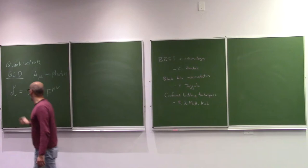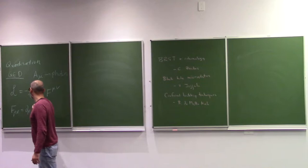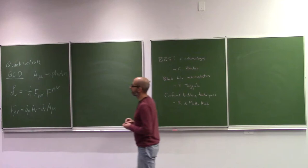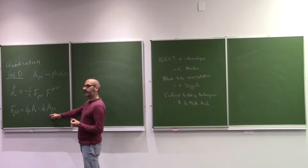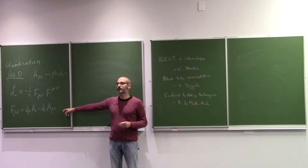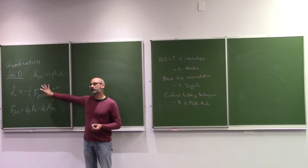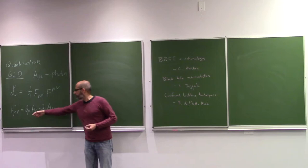F_mu_nu is the field strength of this gauge field, defined as the antisymmetric combination of derivatives of A_mu. By this very definition, you can see that this theory has a very important property. The Lagrangian is made so that it's Lorentz invariant, because all the indices are contracted. So this is a fully relativistic Lagrangian. But by thinking of the fields in this way, that gives us some kind of freedom.